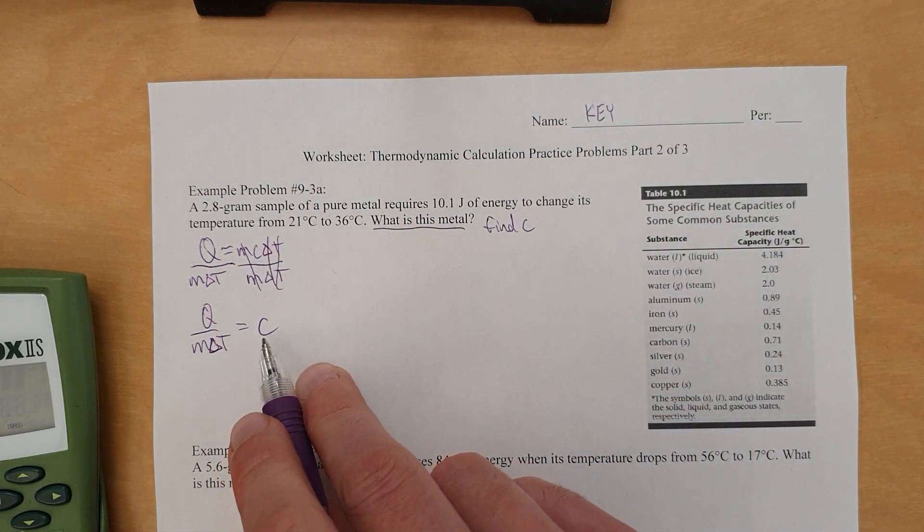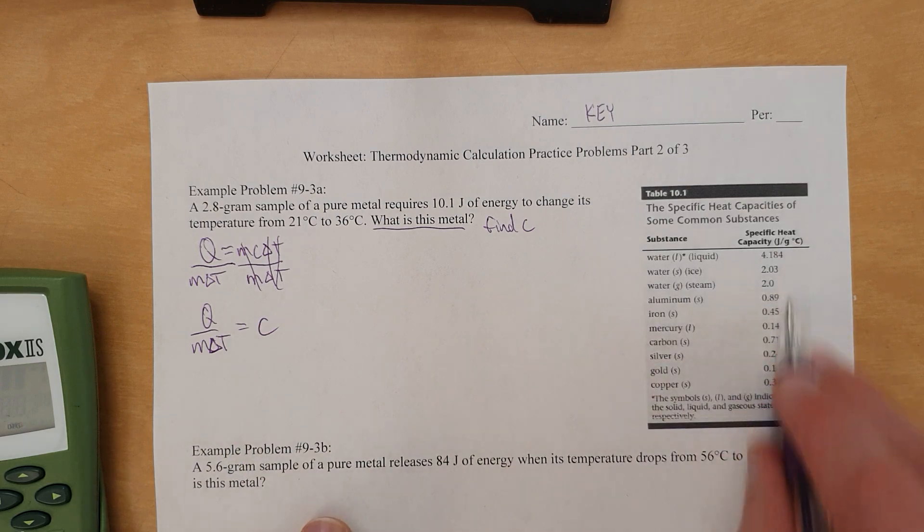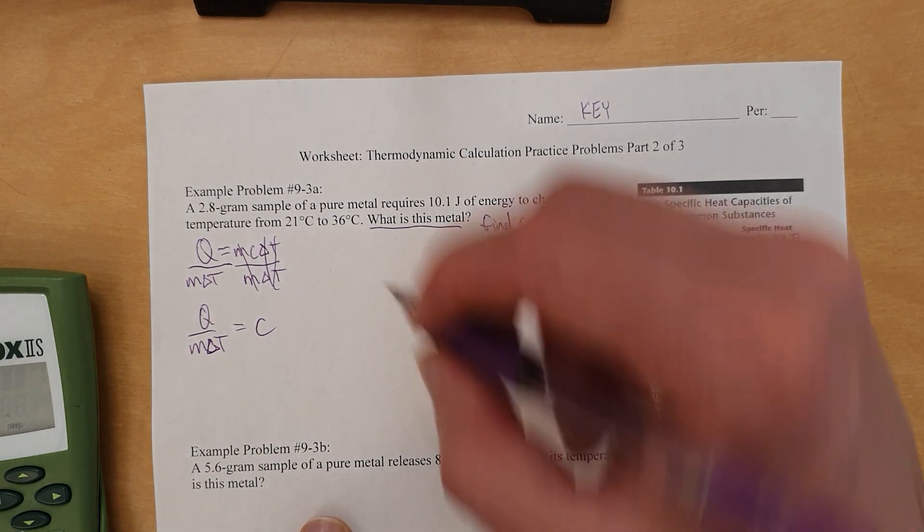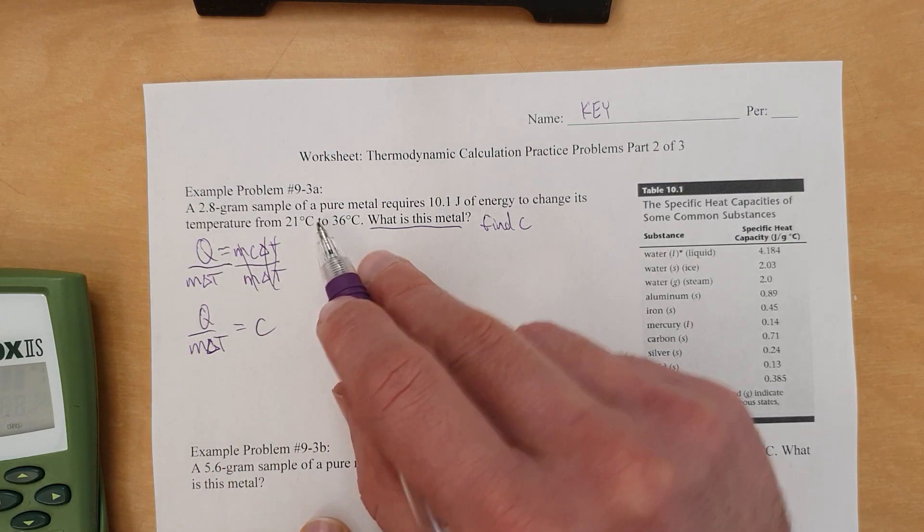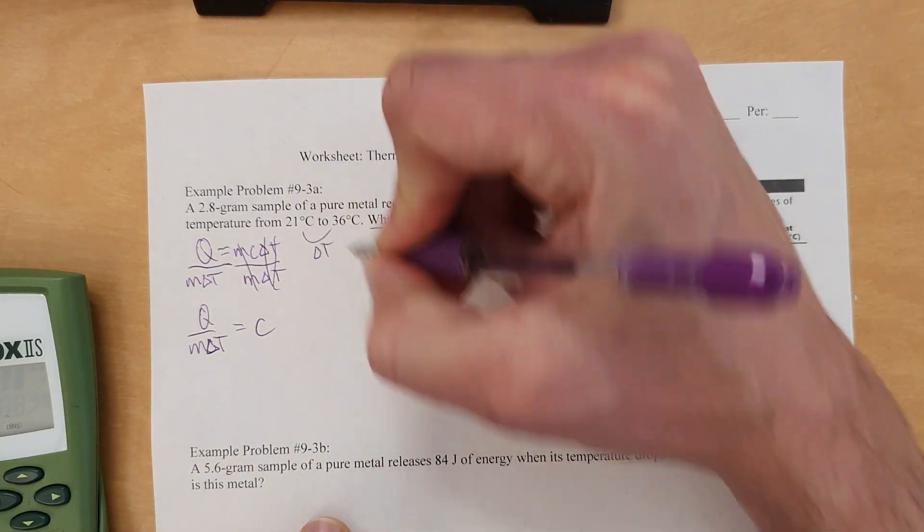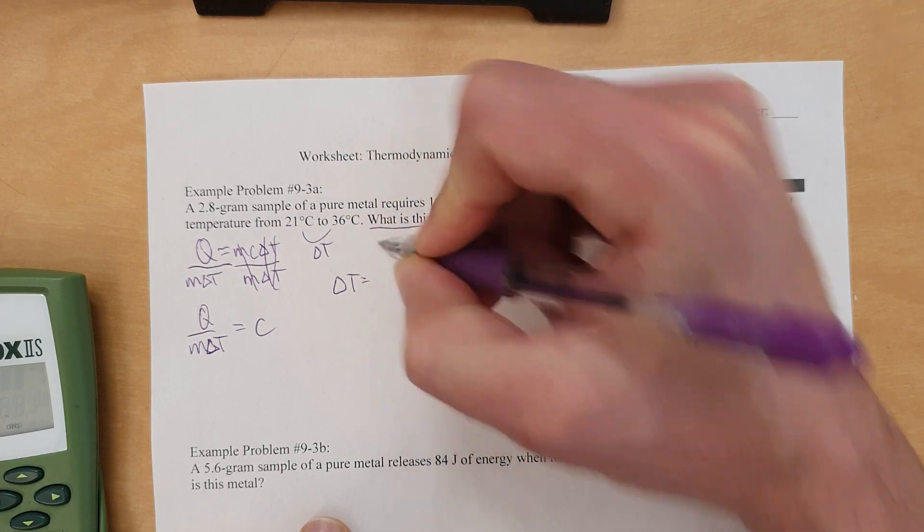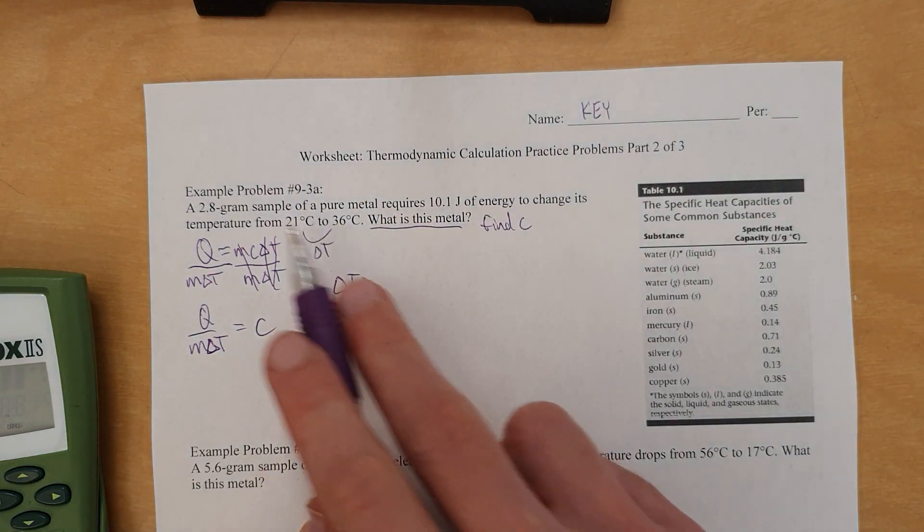Leaving the new version of the equation being Q over m delta T equals C. Now we can find what C is, and once you find C, we can match the list and identify the metal. So we've got Q, we've got m, and we've got delta T. We need to find delta T.